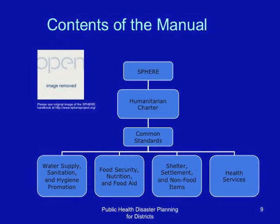Underneath this, it shows standards for water supply and sanitation, food security, nutrition and food aid, shelter and settlement management and non-food items, and the management of health services in the disaster situation. These standards are mainly applicable for disasters that result in mass displacement of people, with people living in camps who need assistance in these various areas. But excerpts of these standards can be extracted and used for smaller-scale disaster situations, provided they involve displacement or resettlement of people.